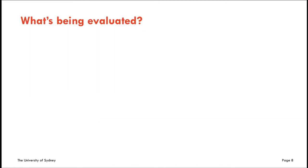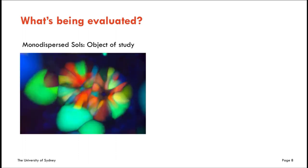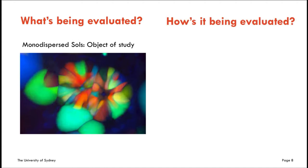So when reading literature reviews, try to identify what is being evaluated. In this case, it's the object of study, but it could as well be a methodology, a theory, or a hypothesis. When we think about evaluation, we usually think about good or bad, but these are very broad categories. As this example illustrates, we can also think about aspects such as relevance, usefulness, validity, or the amount and quality of evidence to support an idea.